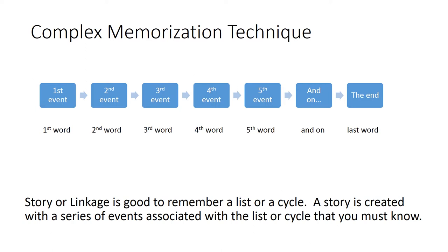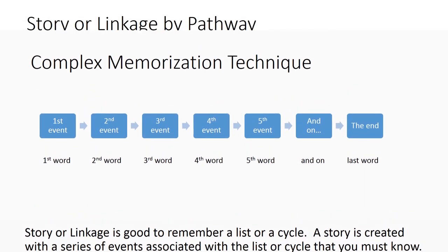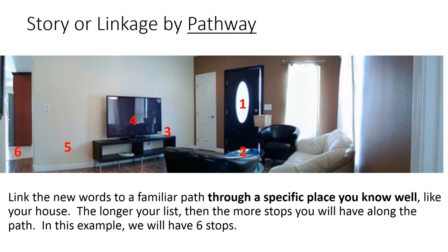Complex memorization technique: story or linkage is good for remembering a list or a cycle. A story is created with a series of events associated with your list or cycle that you must know. Story or linkage by pathway: link the new words to a familiar path through a specific place you know well, like your house. The longer your list, the more stops you will have along the path.